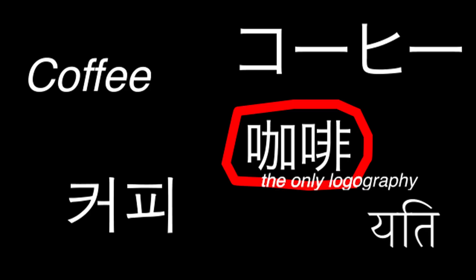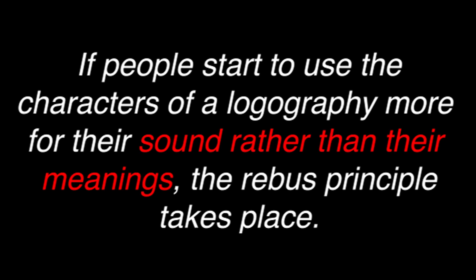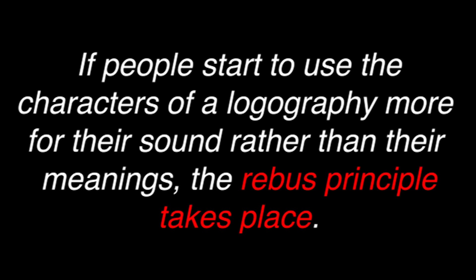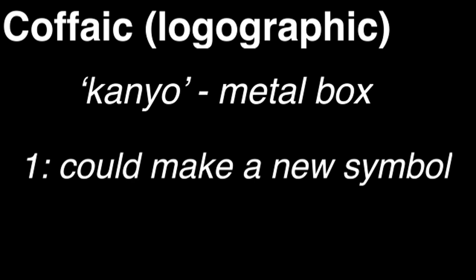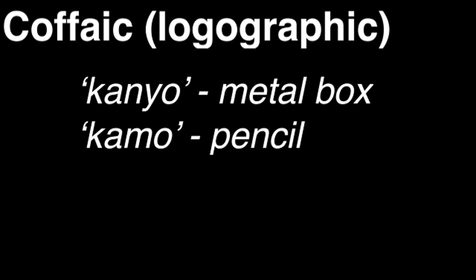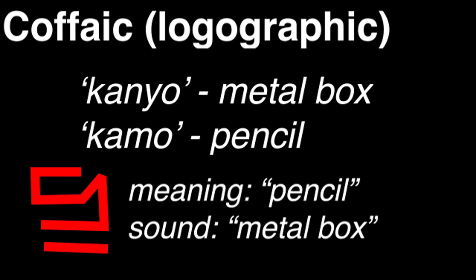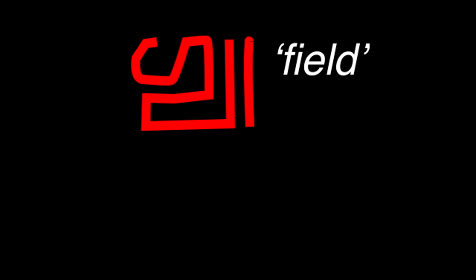When characters of a logography start being used for their sound rather than their meaning, the rebus principle takes place — and this essentially happens to every logography ever. For example, in some made-up language, the word 'kanjo' means 'metal box'. Since it's uncommon, speakers might use the character for the similar-sounding word 'kanjo' meaning 'pencil' to represent it. Now that symbol can mean 'pencil' for its meaning, or 'metal box' for its sound — when used for the latter, it's called a rebus. Speakers then start using rebuses more and more.